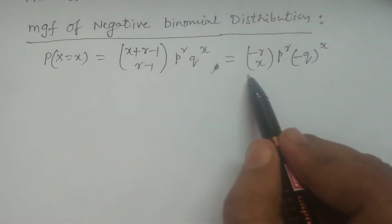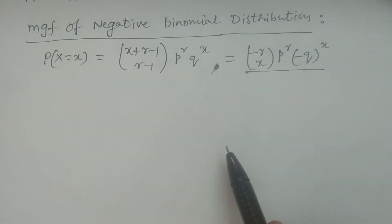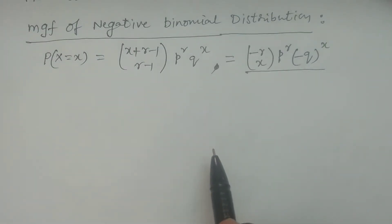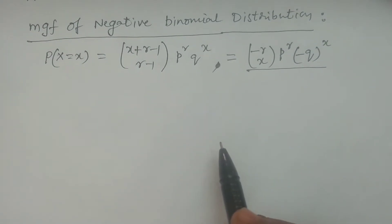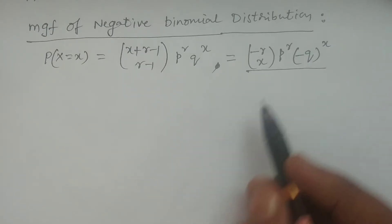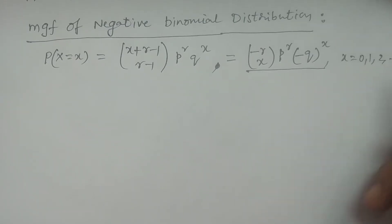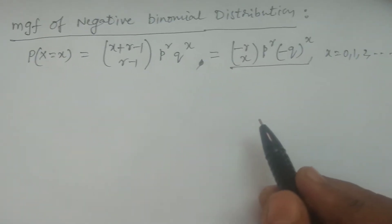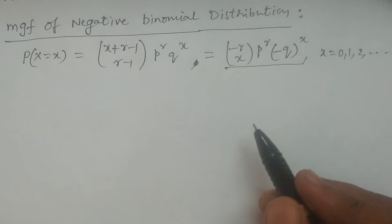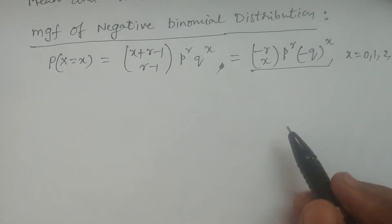Usually, we use this second form in the calculation of the moment generating function. Here, x takes the values 0, 1, 2, and so on — infinitely many values can be taken.